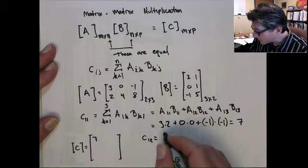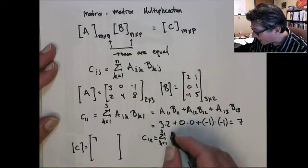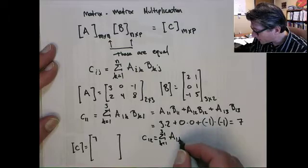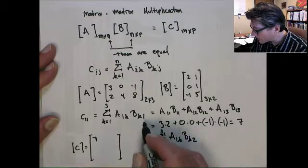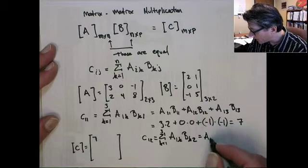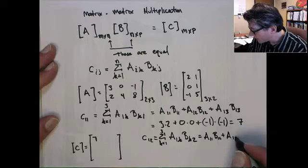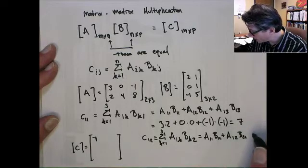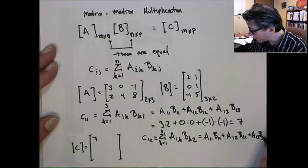Again, do the summation, so that's the sum k equals 1 to 3 of a1k bk2. So now this is 2 because that's the value of j, it's 2, and so that'll give me a11 b12, a12 b22, plus a13 b32.